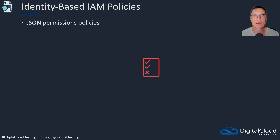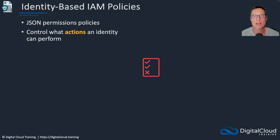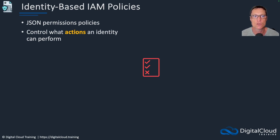For both types of policy, they're written in JavaScript Object Notation — JSON — and these are permissions policies, meaning they control what actions an identity can perform. Actions in AWS essentially means API calls. Once we've authenticated to AWS, we need to be authorized to make API calls. Those are the actions — the individual API calls that an identity is permitted to make.